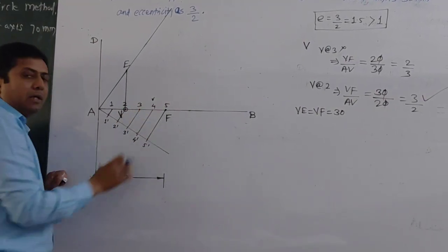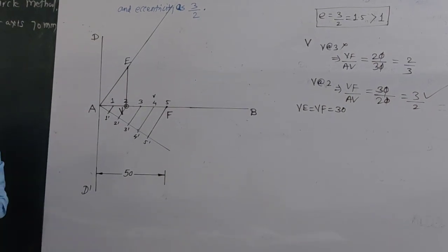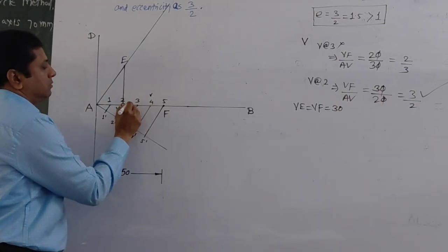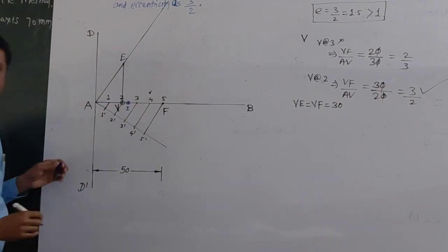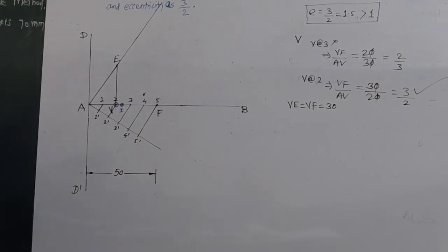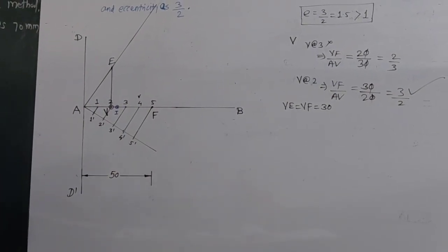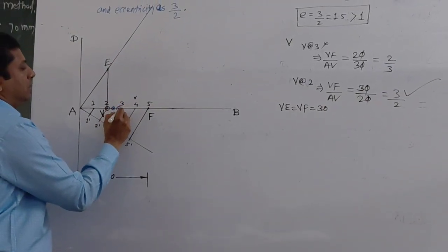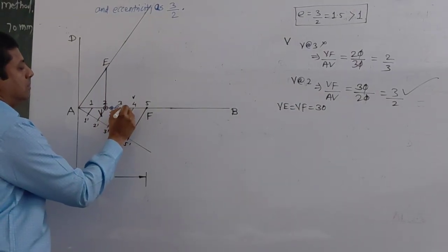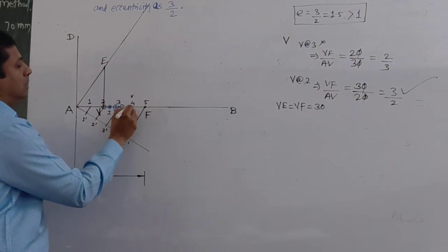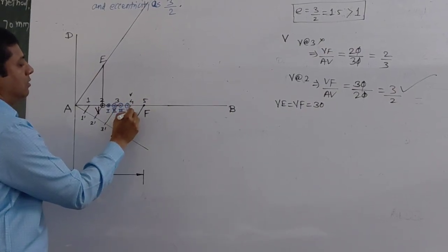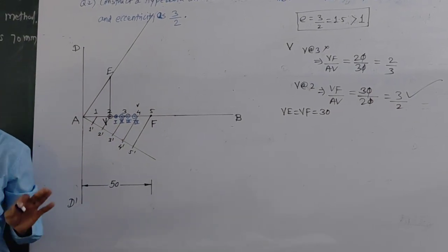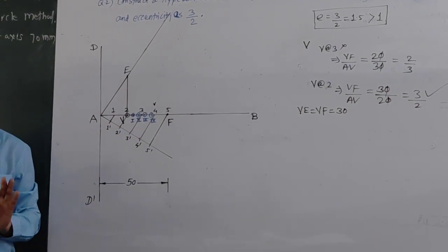Randomly mark points between V and F on the principal axis. I am marking points — I will give Roman numeral 1 for the first point, at any random distance. Then mark another point as number 2, another as number 3, and another as number 4. I have taken 4 points randomly.